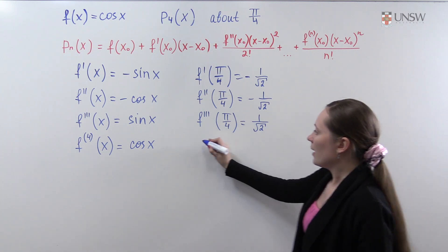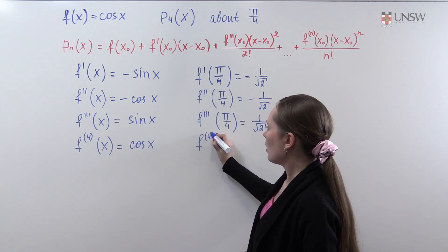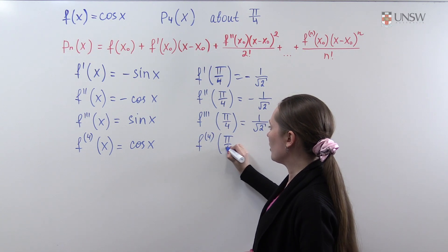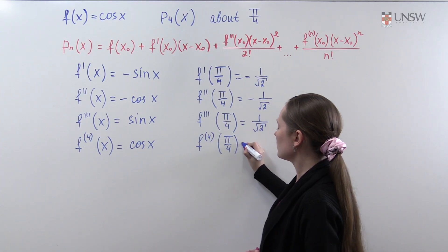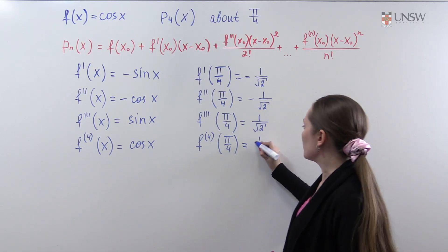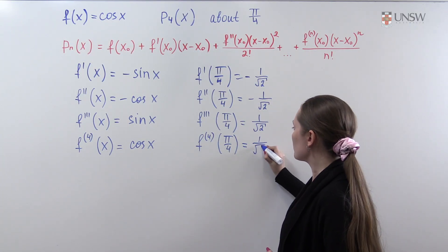The value of the fourth derivative at the point pi over 4 is 1 over square root of 2.